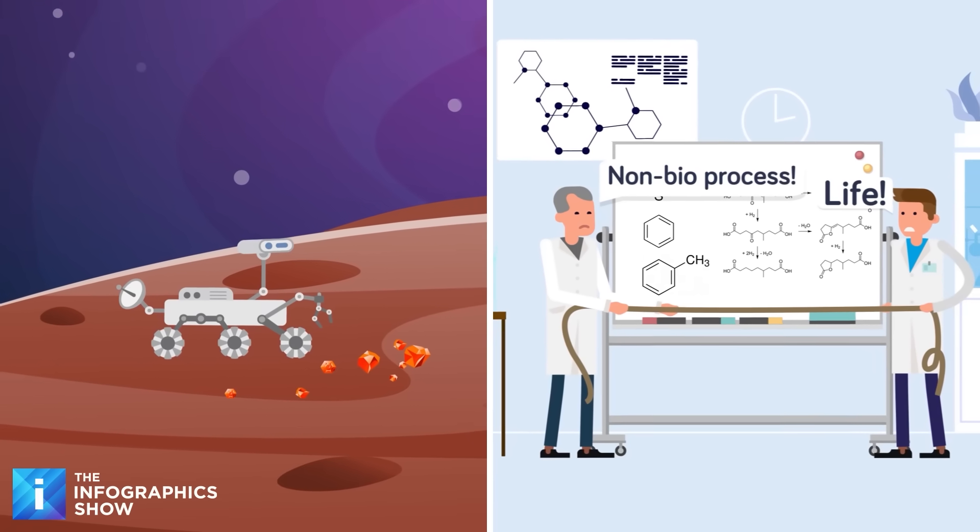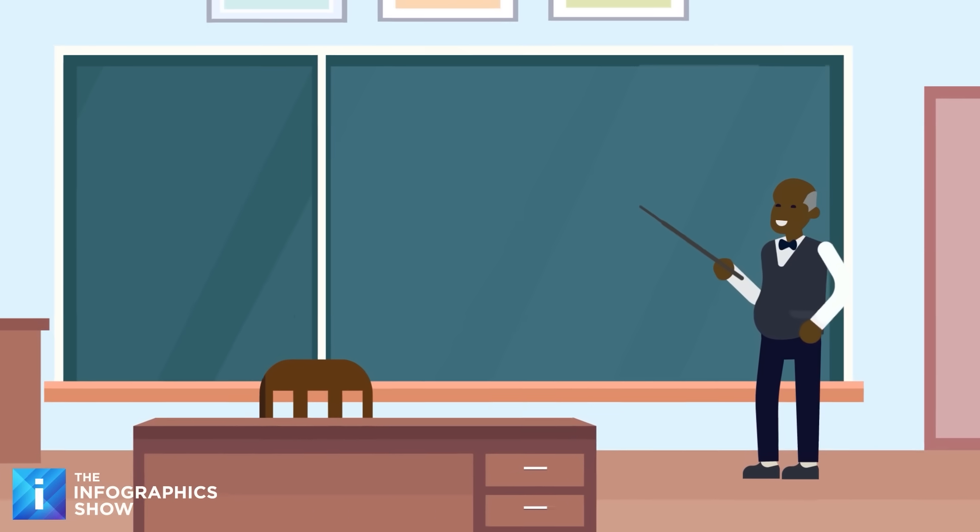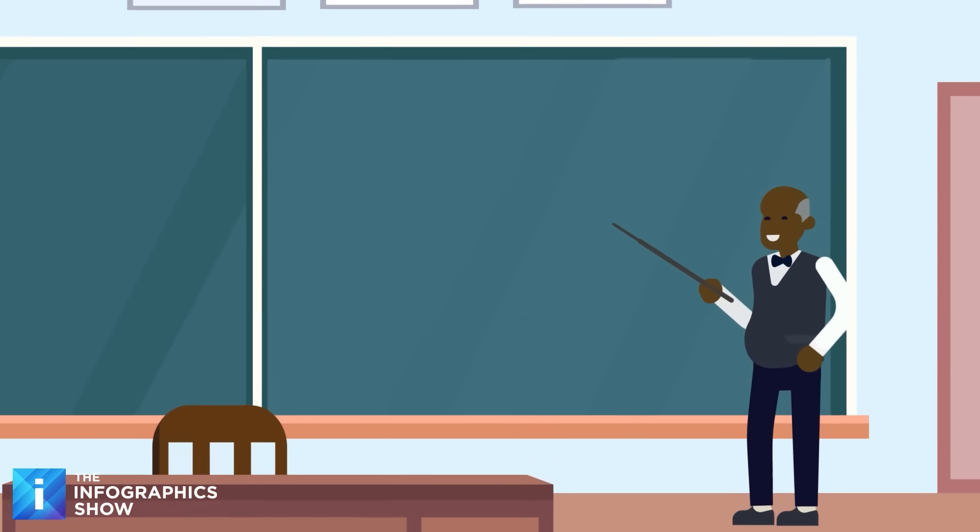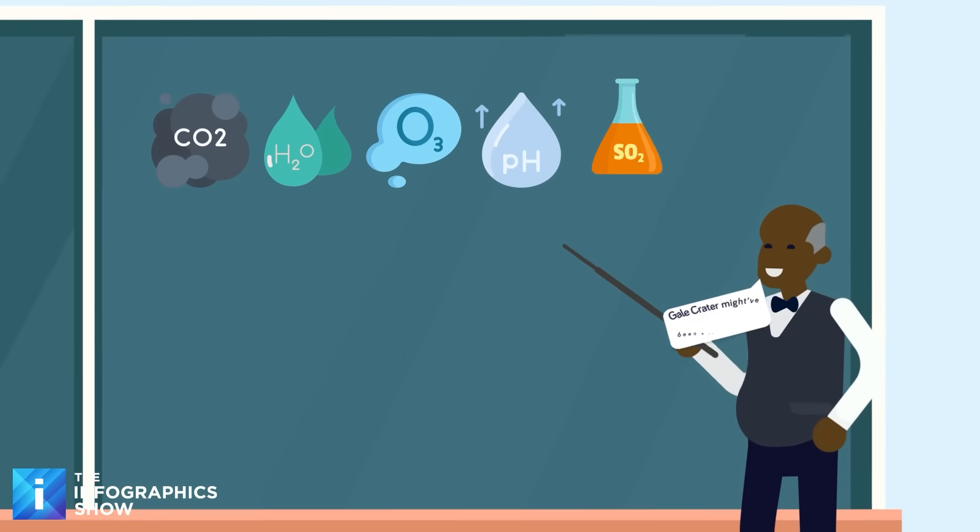While these are the building blocks of life, they can also be formed through non-biological processes. The rover also found further evidence of past freshwater lakes with neutral pH and the presence of key elements for life, specifically carbon, hydrogen, oxygen, phosphorus, sulfur, and nitrogen.